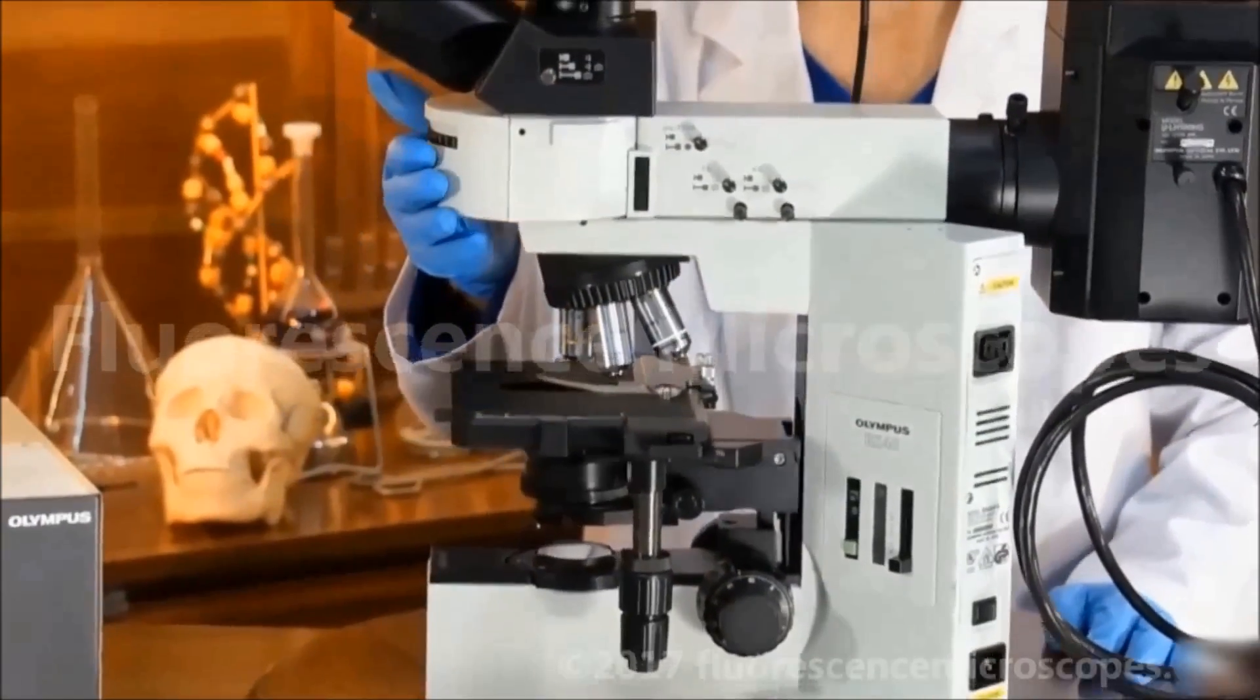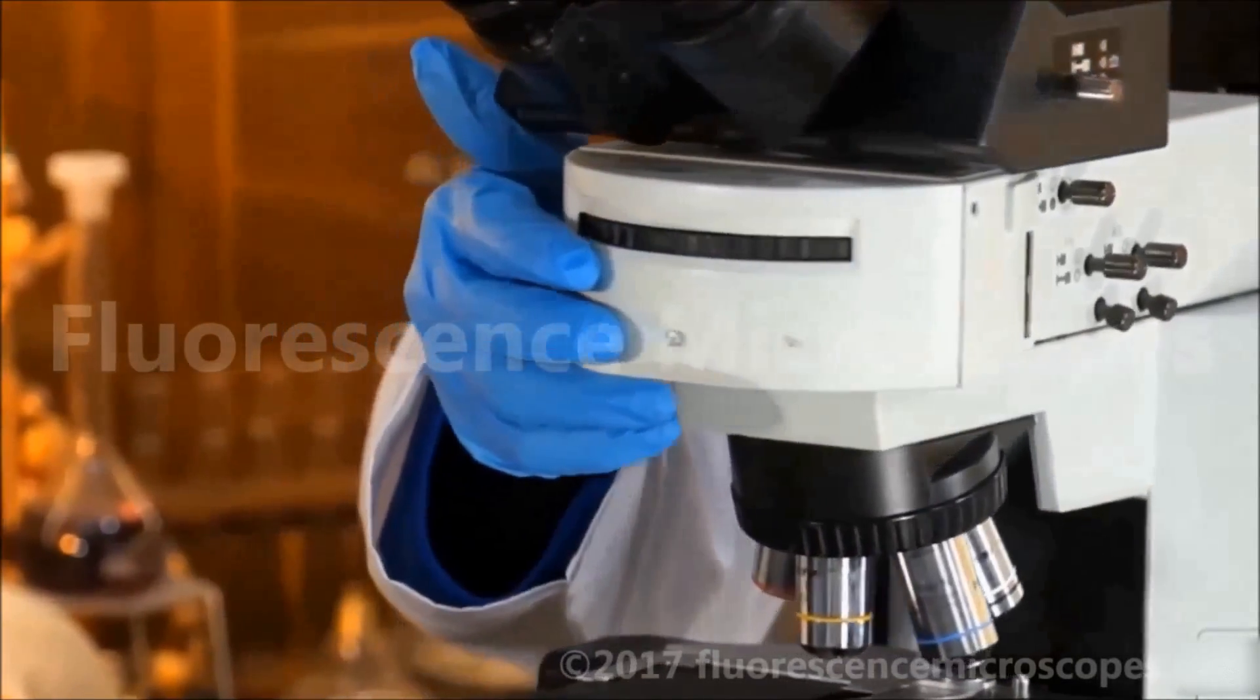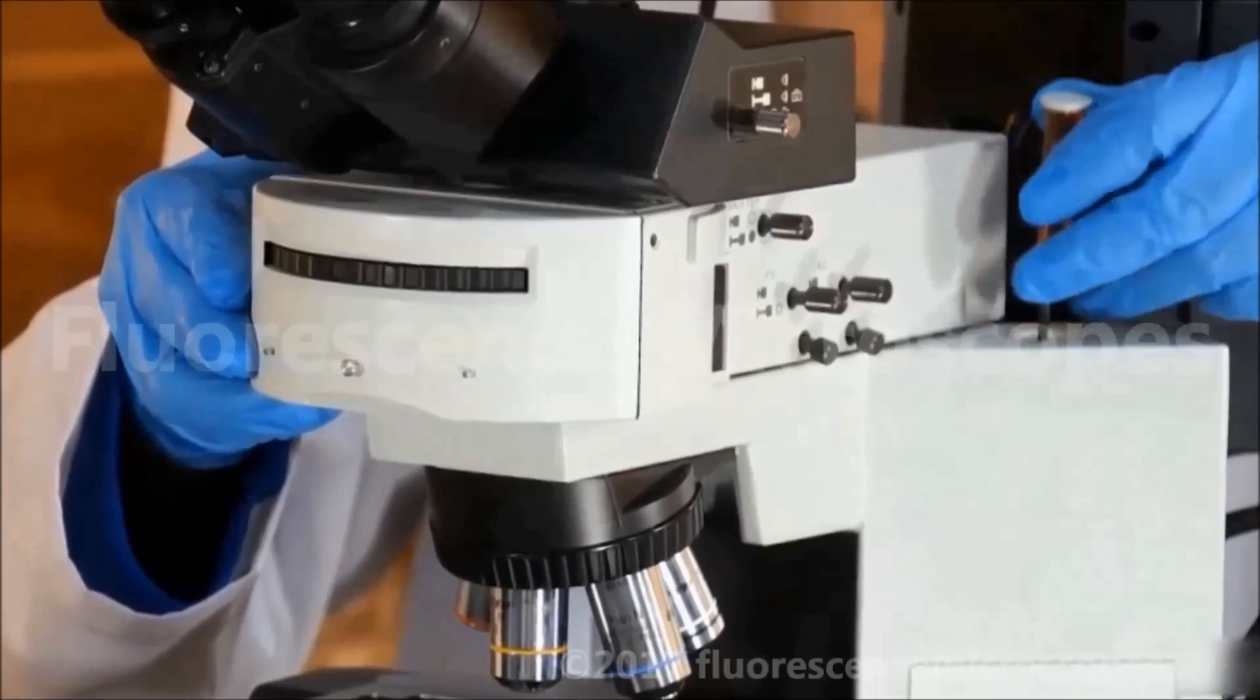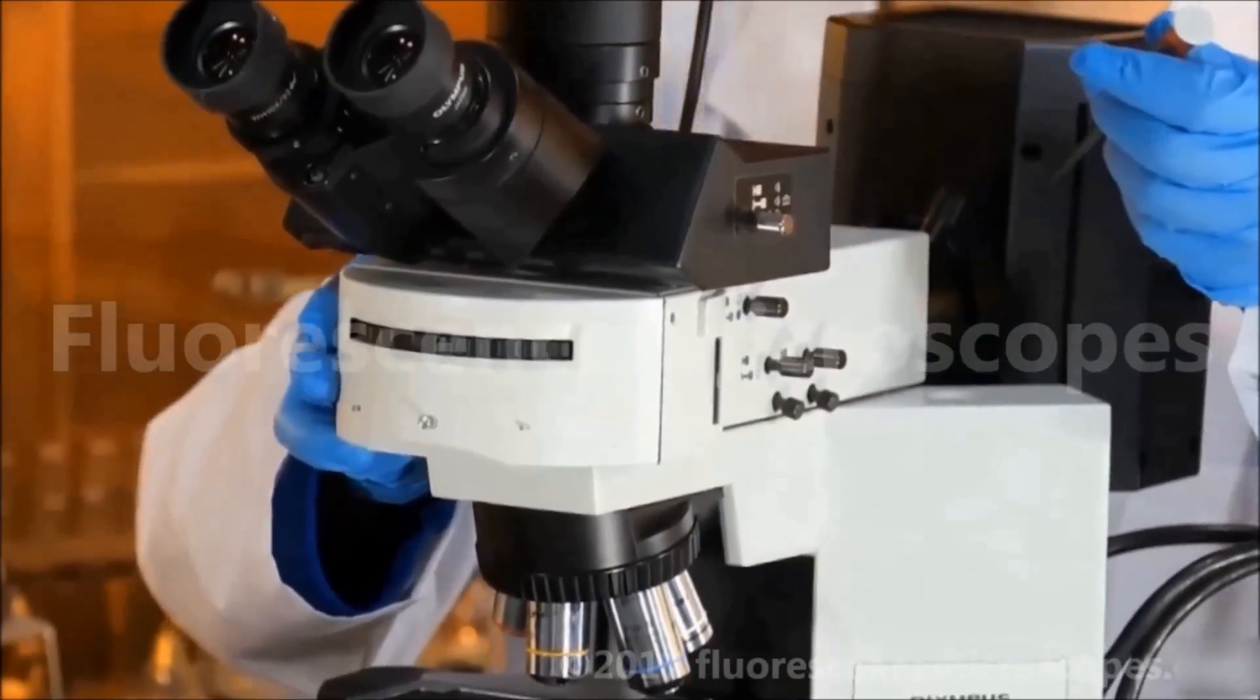We have our dichroic filter cubes inside the turret, the reflector turret. I can access that by using the included Olympus 3-millimeter hex screw.